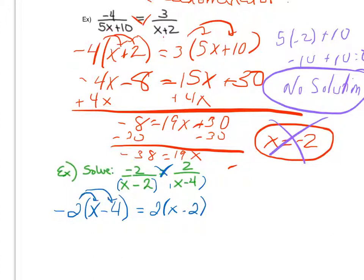I'll distribute my minus 2 on the left and my positive 2 on the right, giving me negative 2x plus 8 equals 2x minus 4.